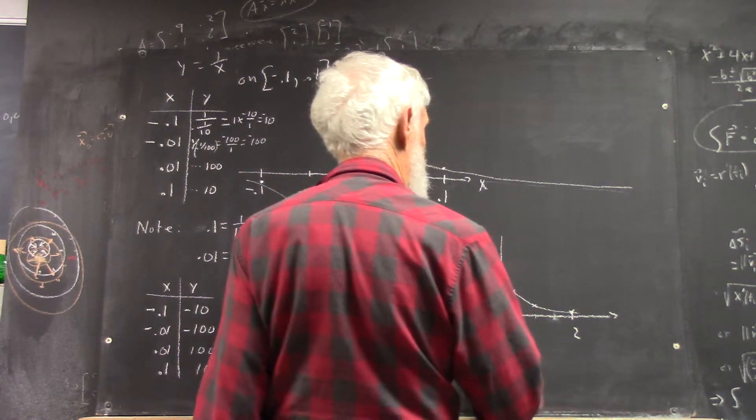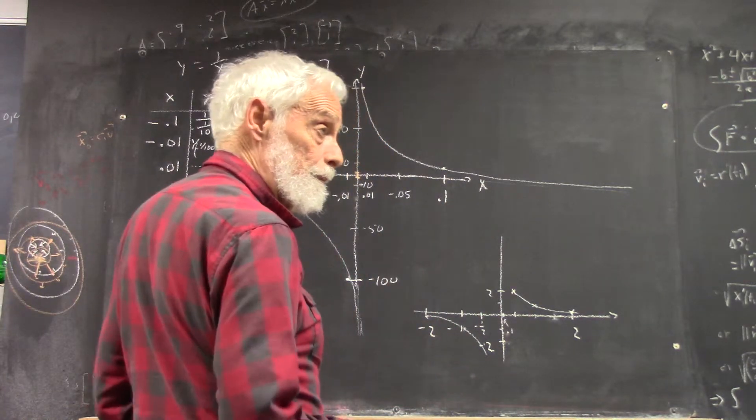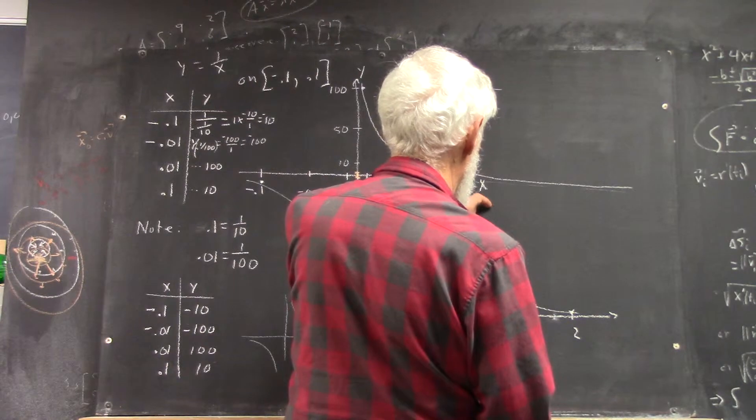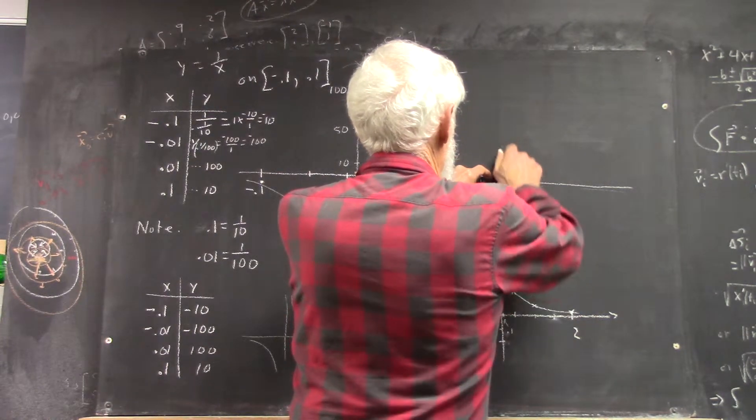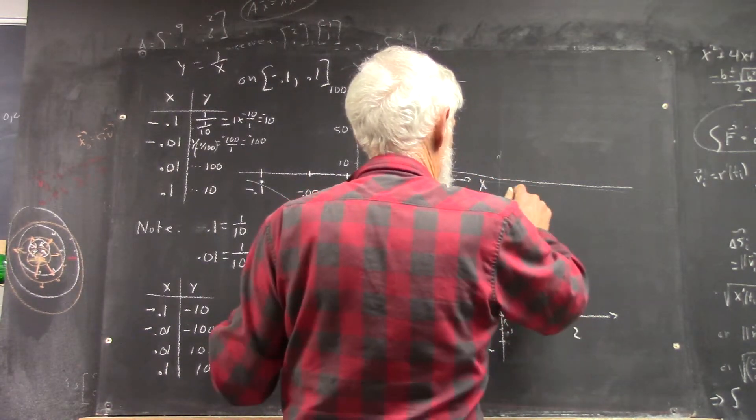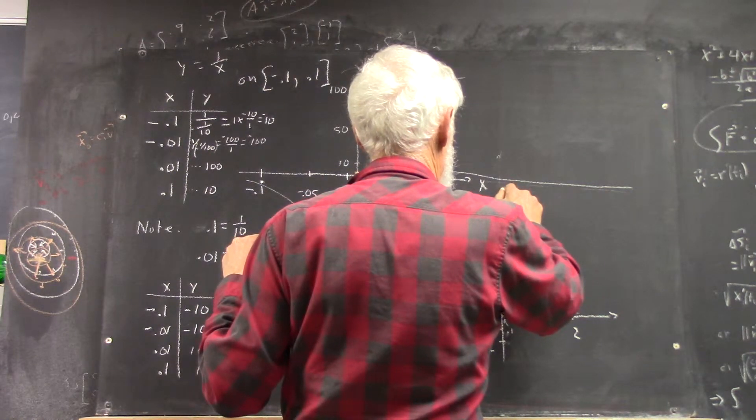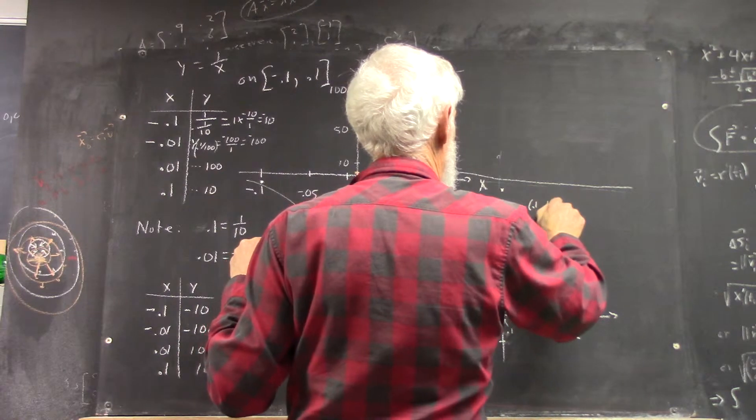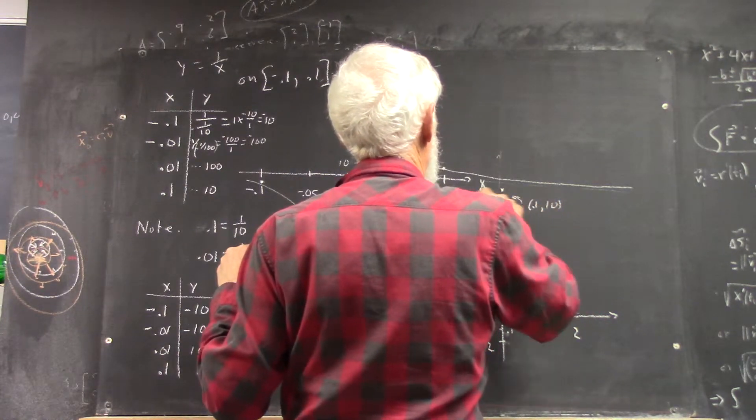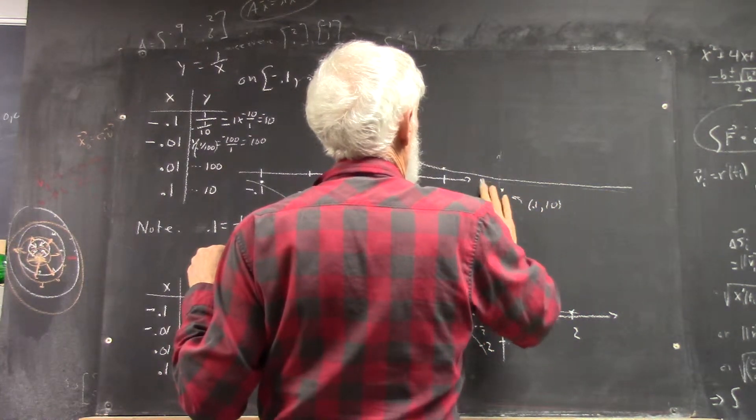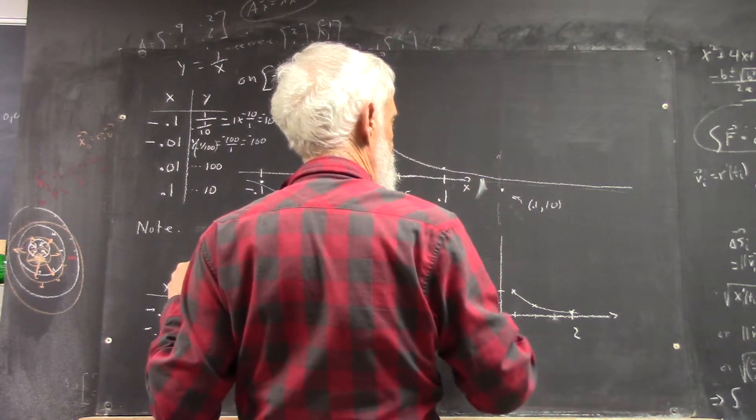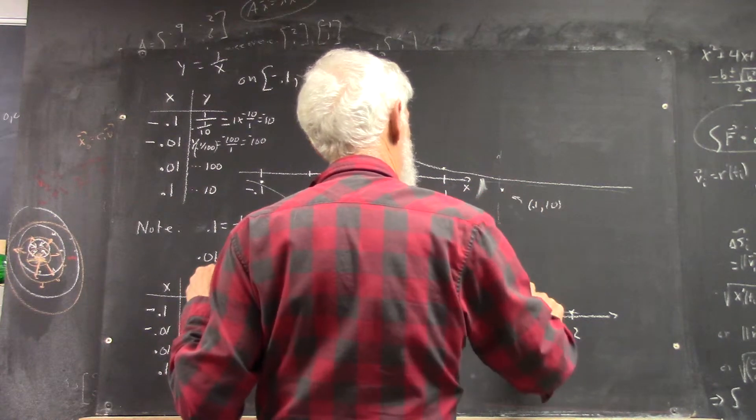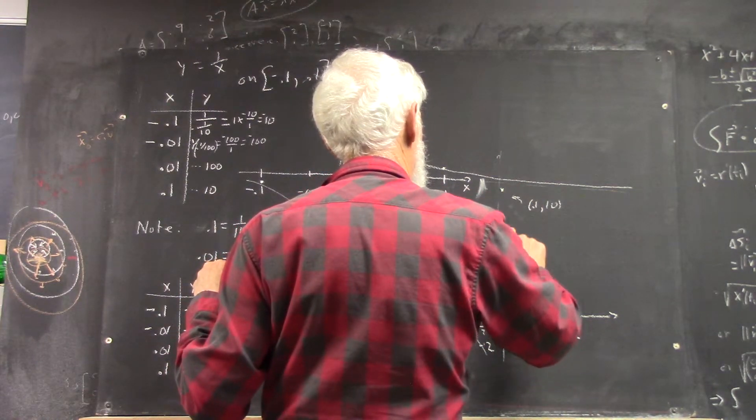It's in pretty close to the origin on the x-axis. And 10 is up here. So, we have to extend our y-axis. I'll fudge just a little bit. But the point (0.1, 10) would be like right here. And actually much closer to the y-axis. So, this graph has got to turn around and go up really fast.